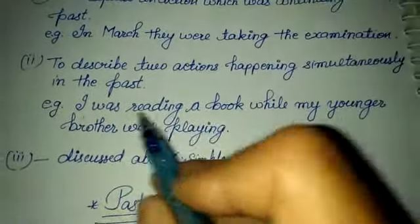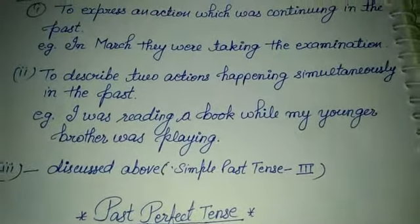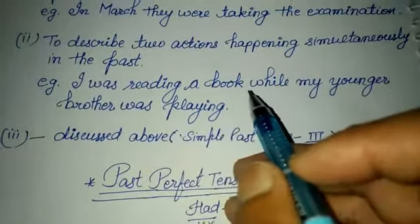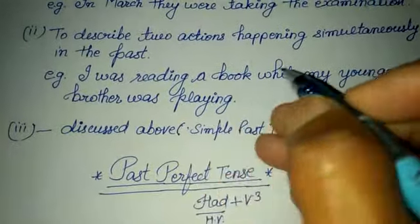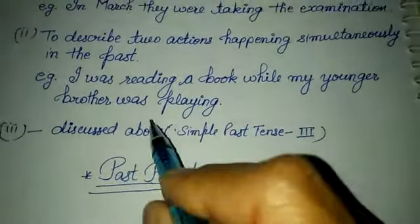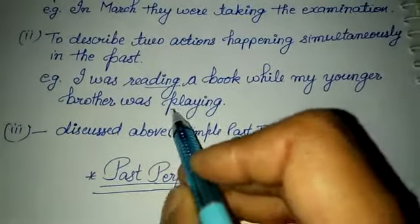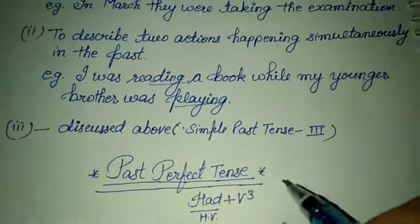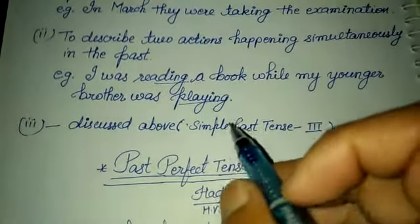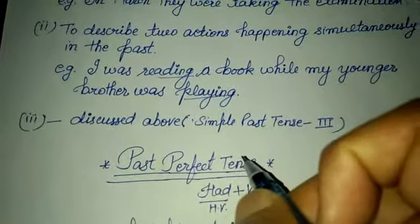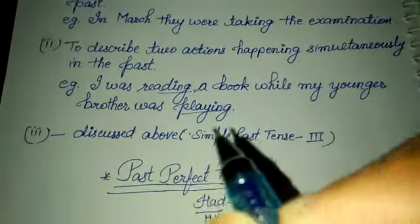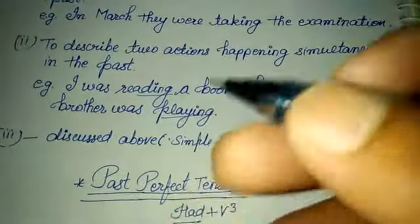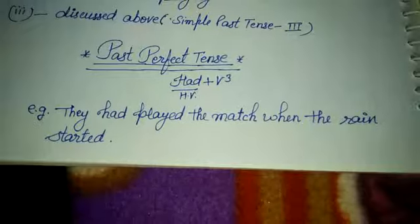The next point: to describe two actions happening simultaneously in the past. For example: 'I was reading a book while my younger brother was playing.' Both actions were happening at the same time in the past. This relates to the third point of simple past tense: when two actions are given in the past and one is complete while the other is still continuing in the same time period, we use past continuous tense for the ongoing one. For example: 'When you came, I was playing / I was reading.'